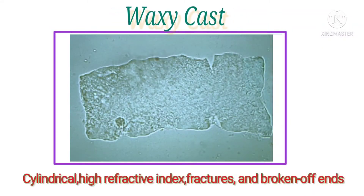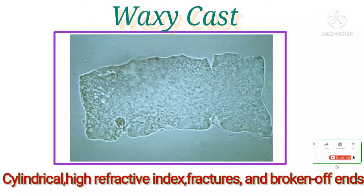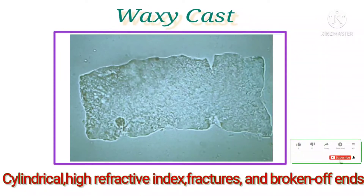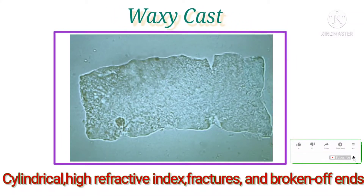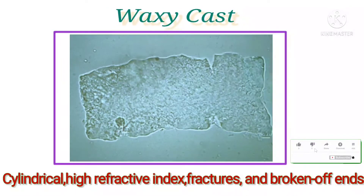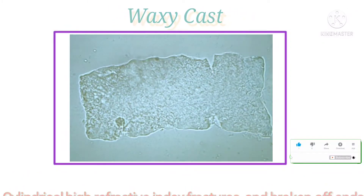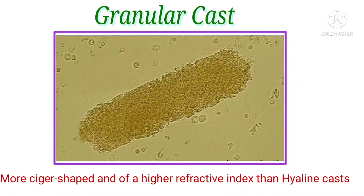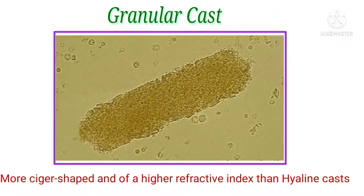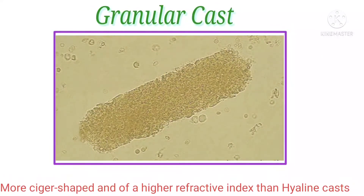Waxy casts are cylindrical and possess a higher refractive index. They are more rigid, demonstrating sharp edges, fractures, and broken-off ends. Their appearance is generally more cigar-shaped and of a higher refractive index than hyaline casts.